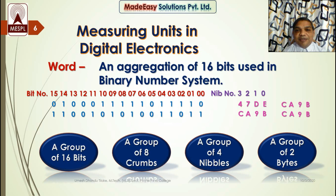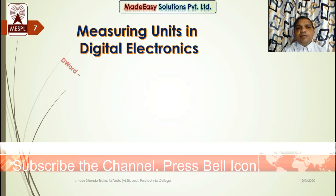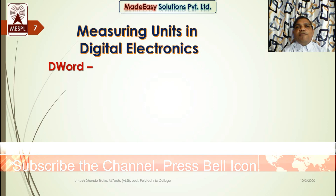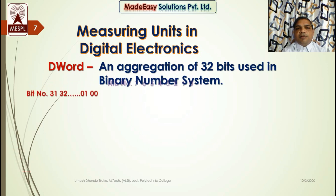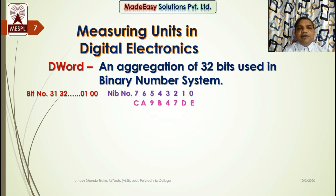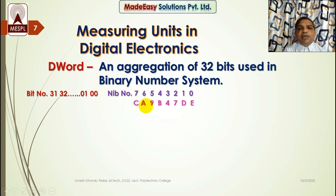The next unit is a dword — double of word — a group of 32 bits used in binary number system. I have taken just one example since the number of possible dwords is 2 power 32, which is 65,536 multiplied by 65,536 — a huge number. The example uses 32 bits from bit 31 to bit 0, represented by 8 nibbles — nibble 7 to nibble 0. CA9B47DE is a dword.